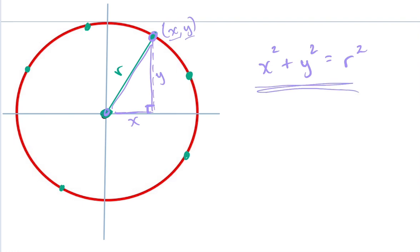I'm basically just applying Pythagorean theorem for any point on the circle. So the x value squared plus the y value squared for any point on the circle must be equal to the radius squared.